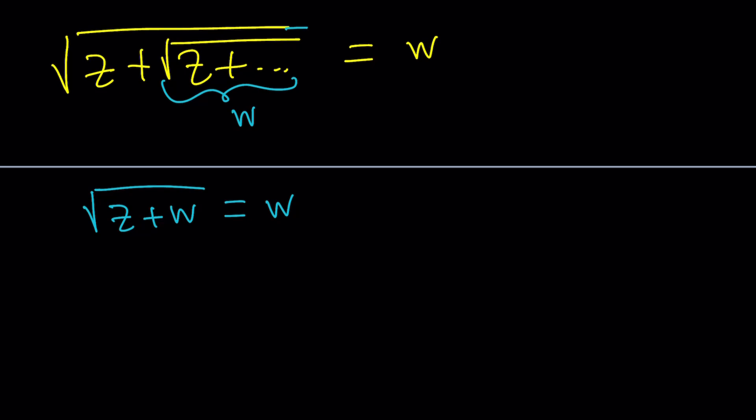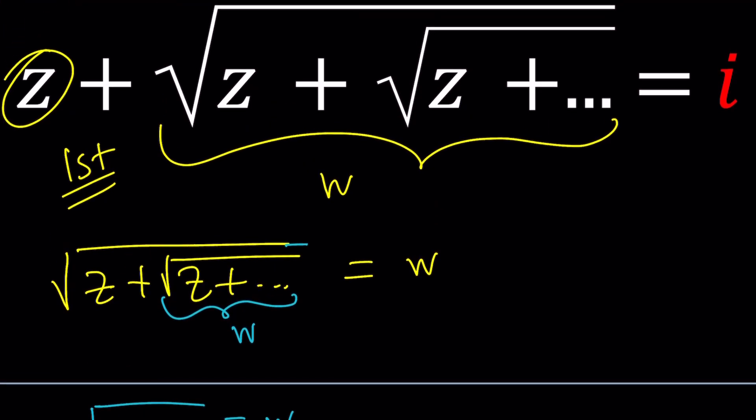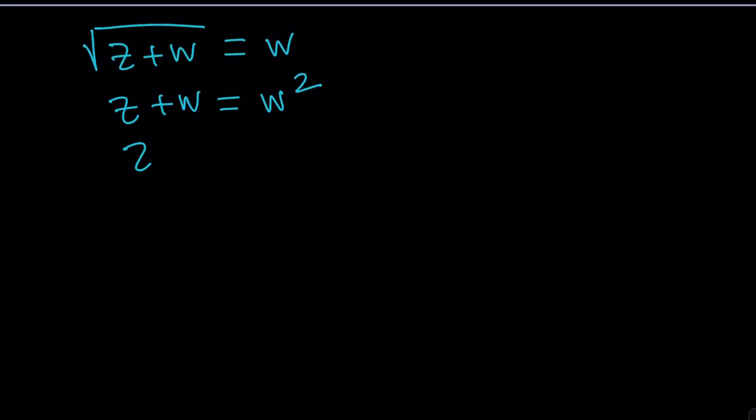And then if you square both sides, you're going to get what? Z plus W equals W squared. Awesome. That's one equation that we're going to use. How are we going to use it? We don't know yet. Let's go ahead and look at the other equation. What's the other equation? Well, it just comes up naturally from the substitution.